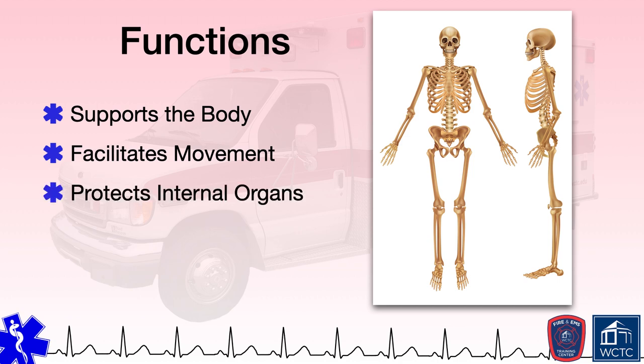The bones within the skeletal system also protect the internal organs from harm due to trauma and external forces. The brain, for example, is protected by the bones that comprise the skull. The internal organs of the chest, including the lungs, heart, stomach, liver, and others, sit comfortably within the rib cage, which shields those vital organs from external trauma.